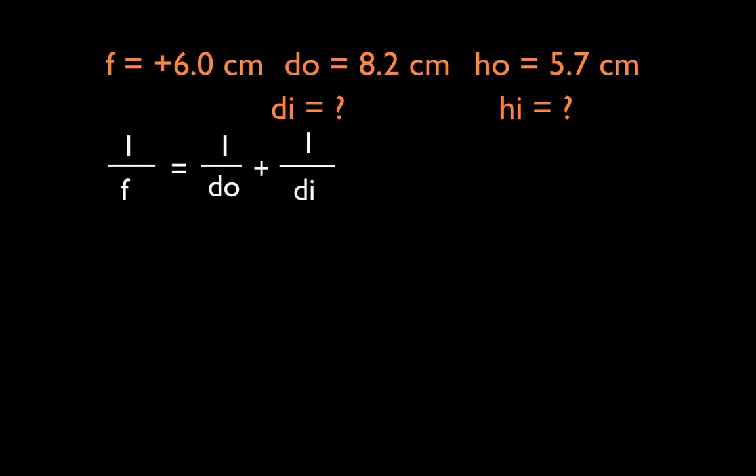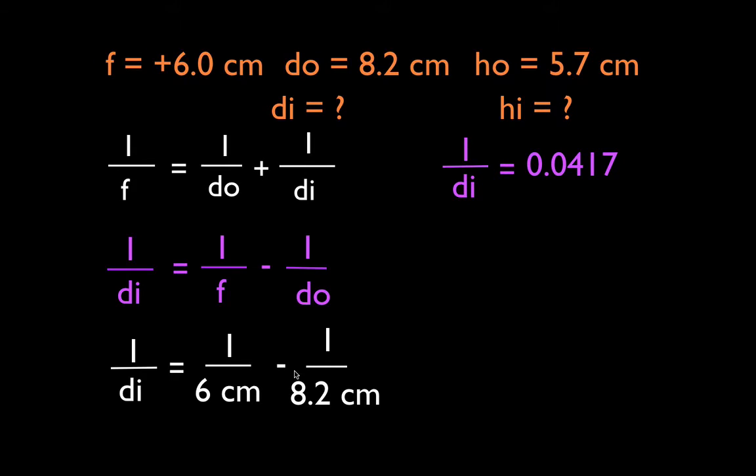We're going to start with our thin lens equation to get our image distance. 1 over f equals 1 over dO plus 1 over dI. We want to solve for dI, so I'm going to subtract 1 over dO from both sides. I get that 1 over dI is equal to 1 over f minus 1 over dO. Now I plug my numbers in. 1 over f is 1 over 6. 1 over dO is 1 over 8.2. I keep my minus sign in there. If you have a regular graphing or scientific calculator, you should be able to just put in 1 divided by 6 minus 1 divided by 8.2 and you get the right answer.